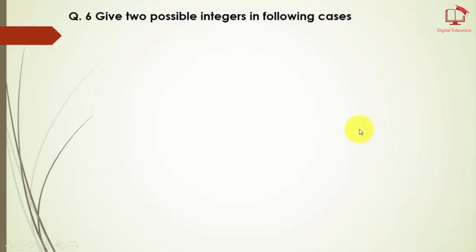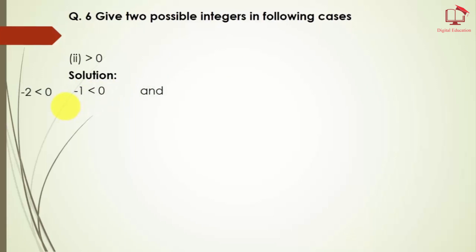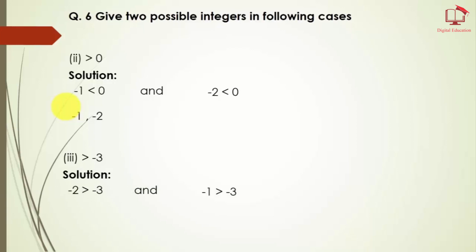Question number 6: give two possible integers in the following cases. For the second part — integers less than 0 — the two possible integers are minus 1 and minus 2, since both minus 1 less than 0 and minus 2 less than 0. For part number 3 — greater than minus 3 — the possible integers are minus 2 and minus 1, since both are greater than minus 3.